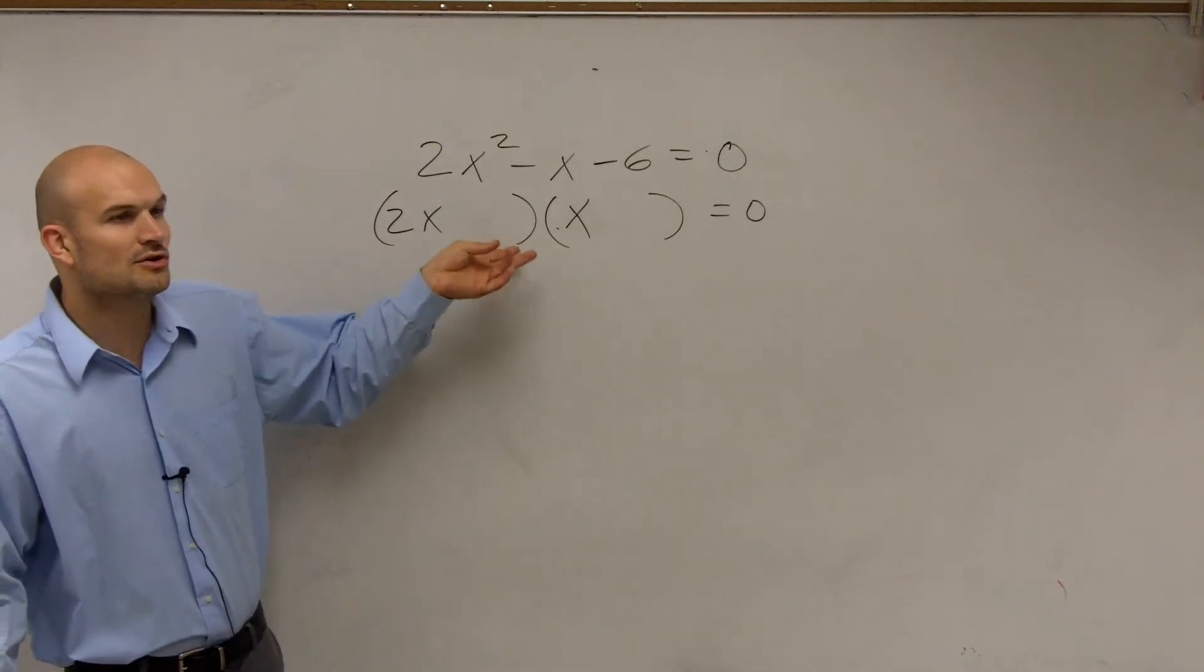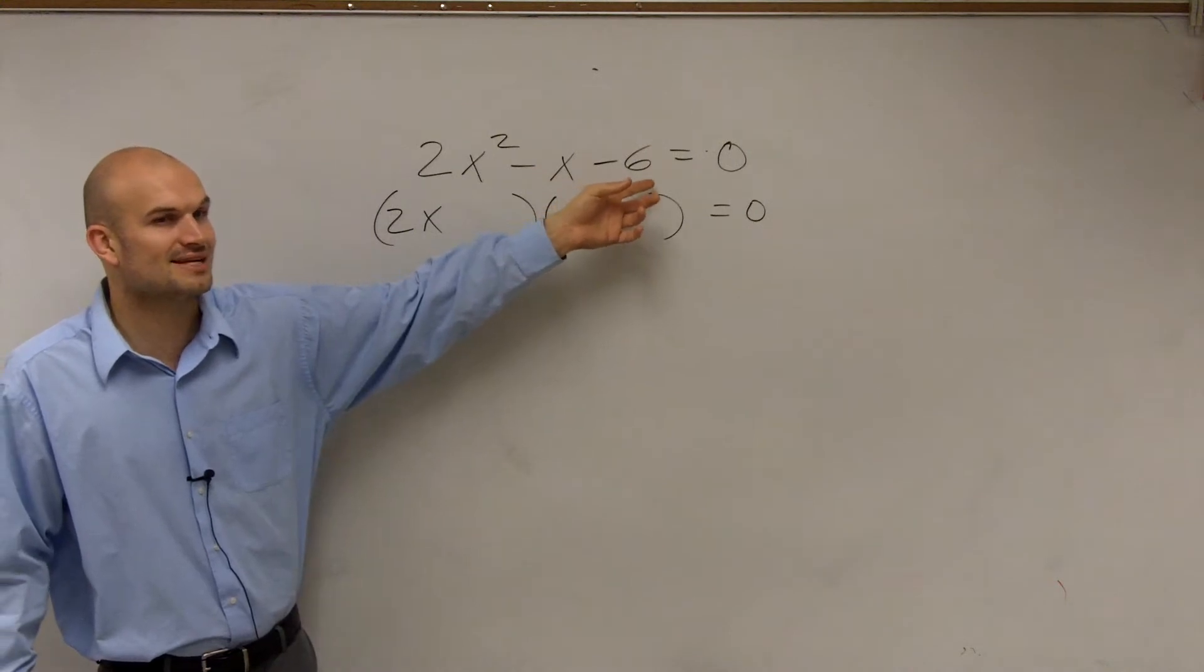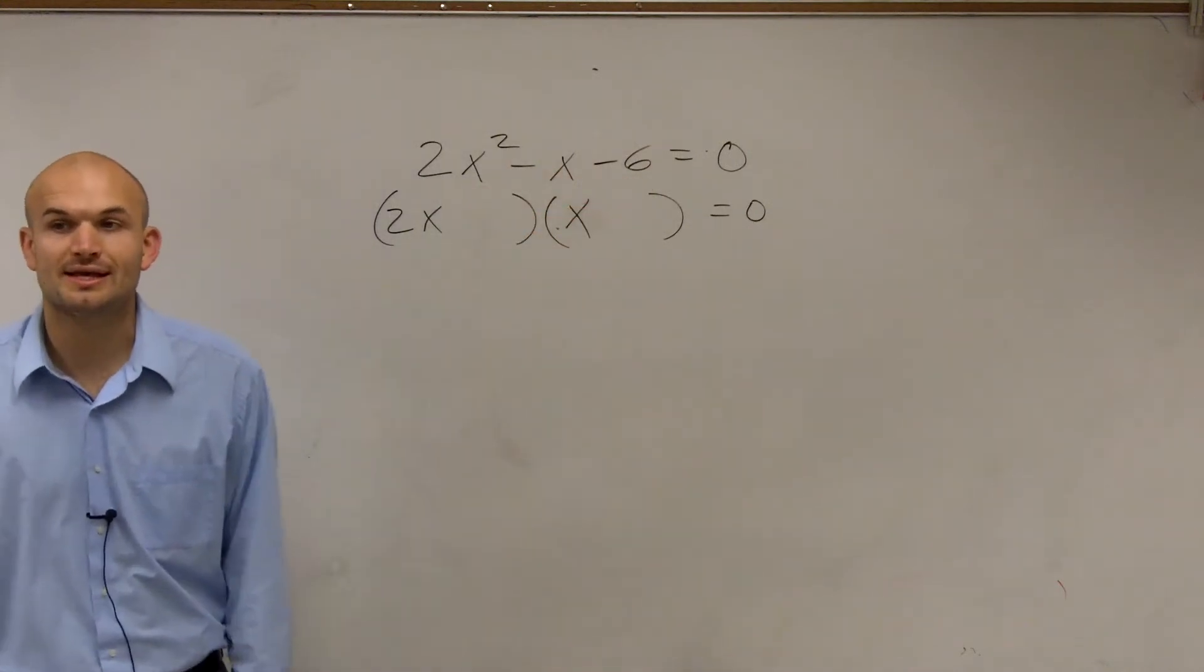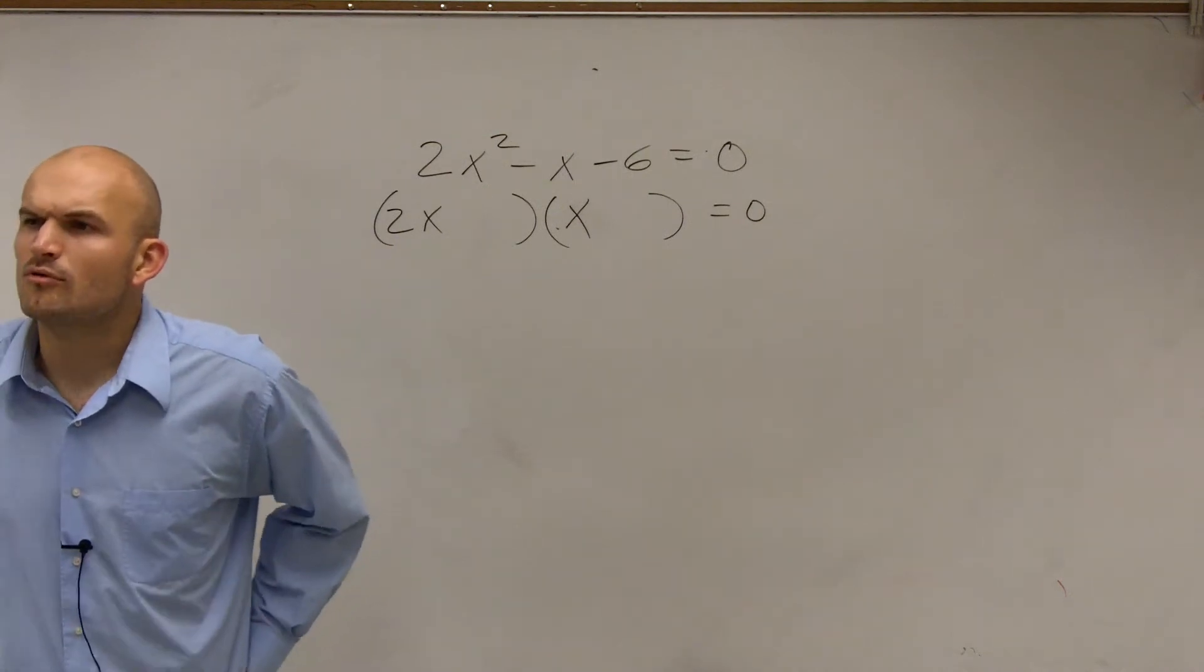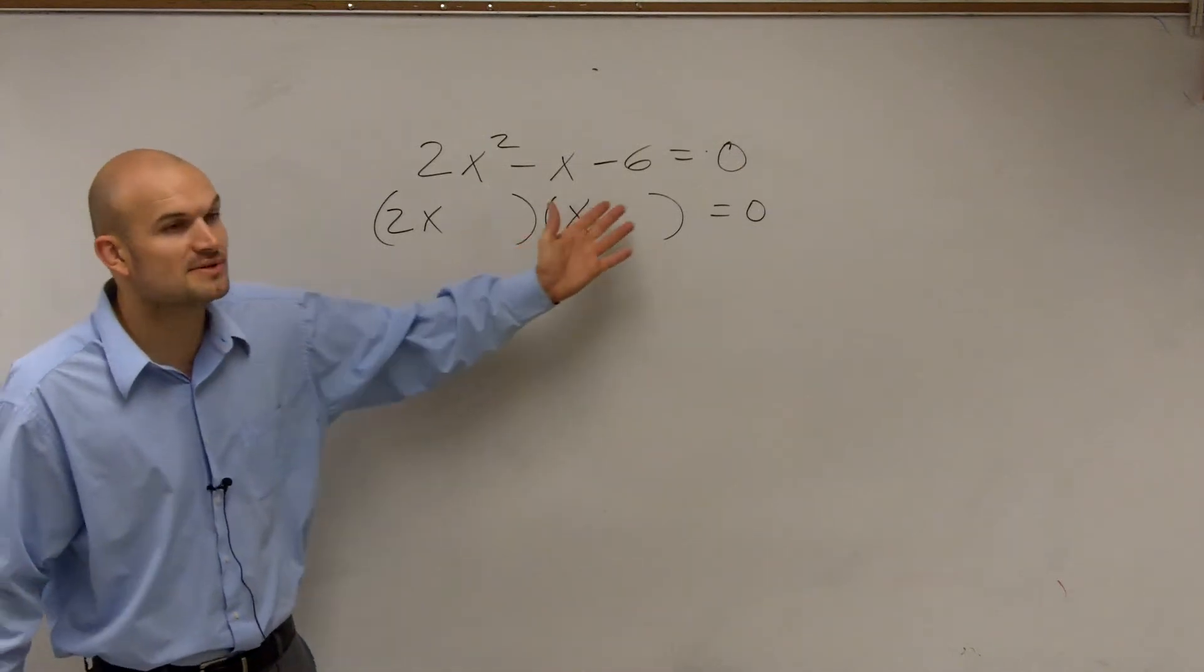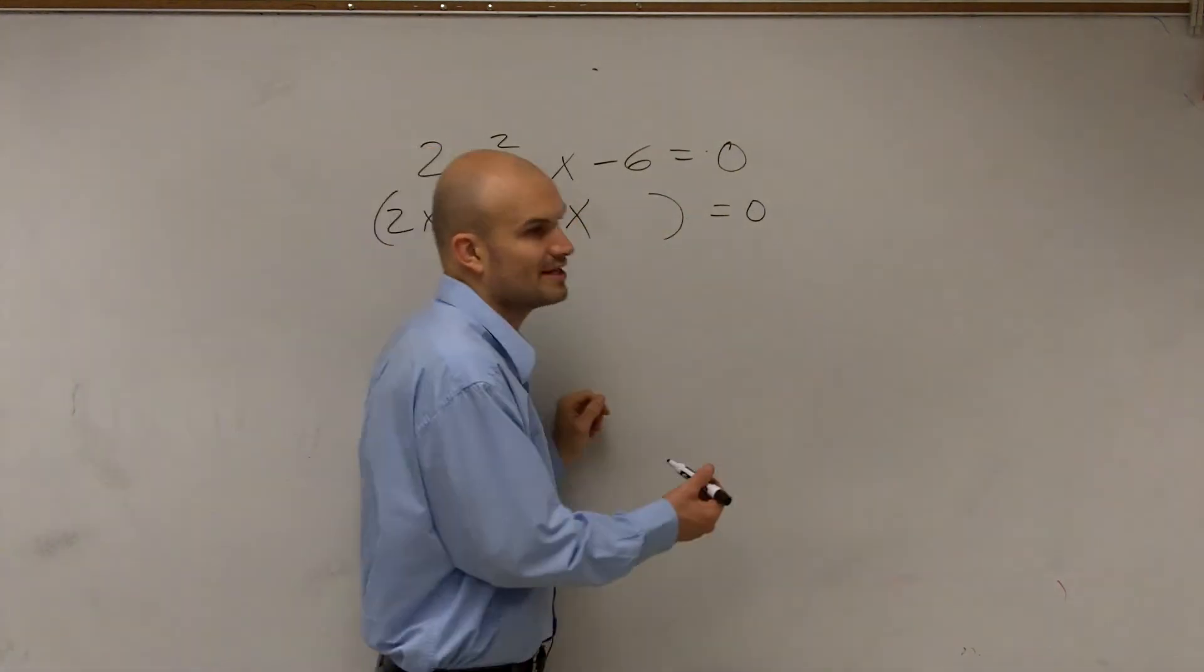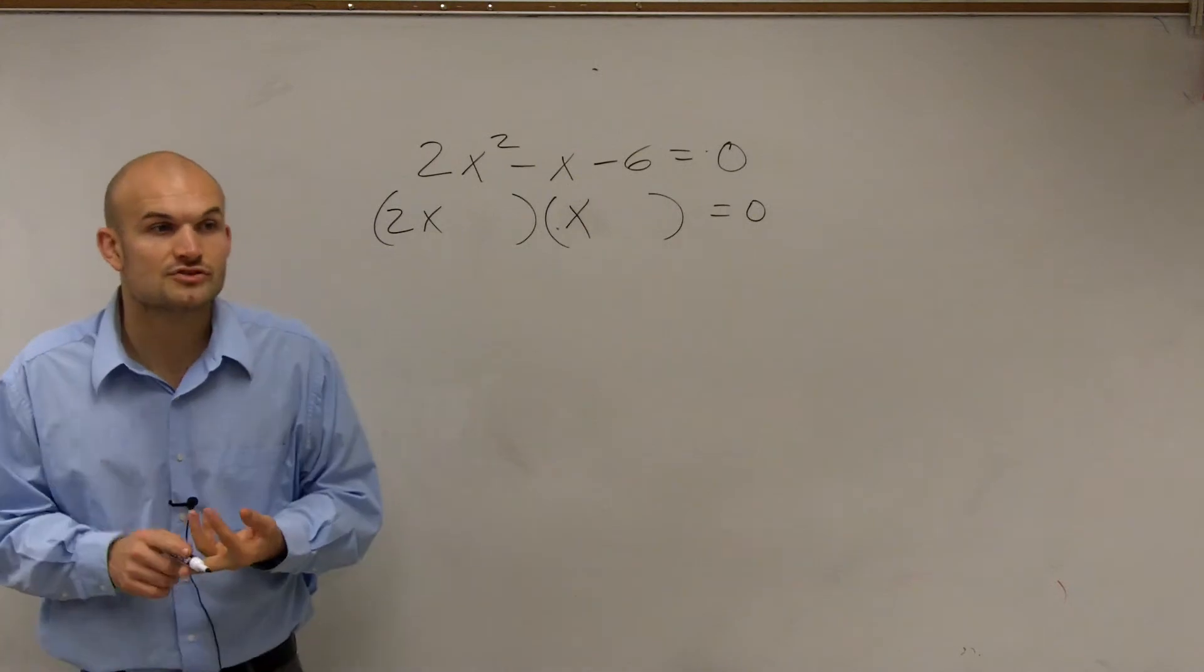Because obviously, there's no two numbers that multiply to give you positive 6 but add to give you that negative 1. However, when we look at it in this format, what we have is two numbers that are going to multiply to give us -6. So there's a lot of different numbers that multiply to give us -6. You have 6 and 1, and we have 2 and 3.